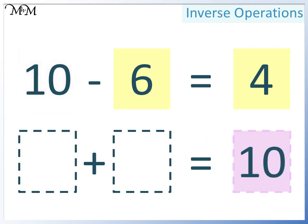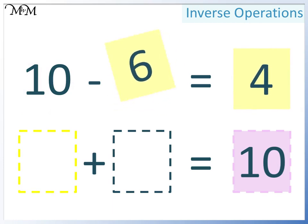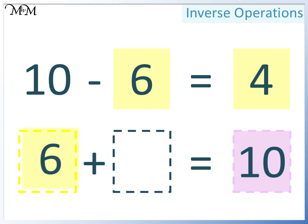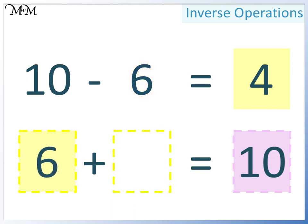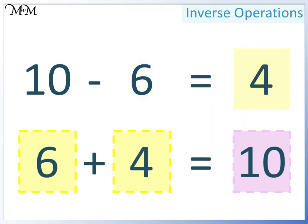In this space we can have either of the two smaller numbers. This time we will have 6, so in this space we must have 4. 6 plus 4 equals 10.